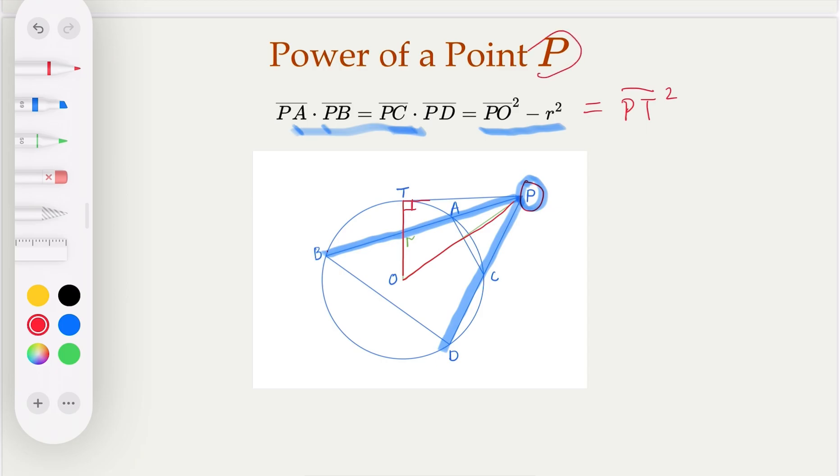So that's the quantity. Once point P is fixed, when the circle R is fixed, we know the quantity is a constant. So that's why we define that as what is called the power of a point.